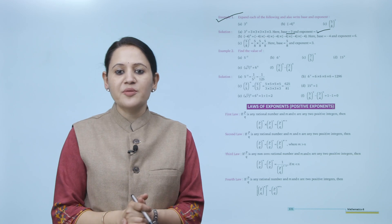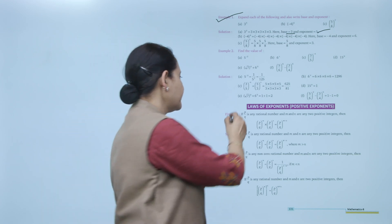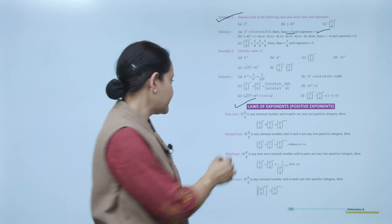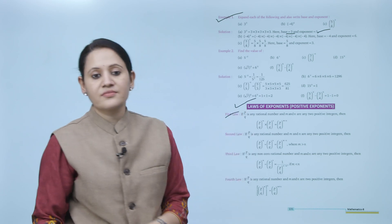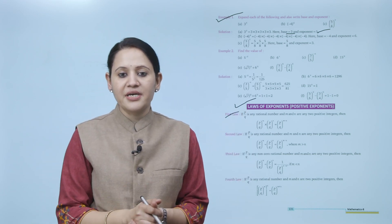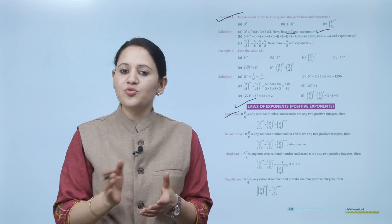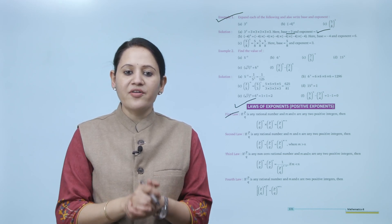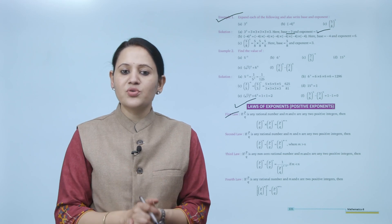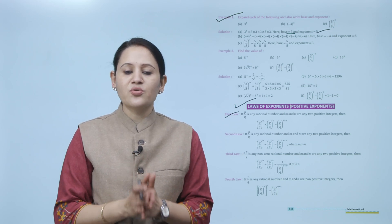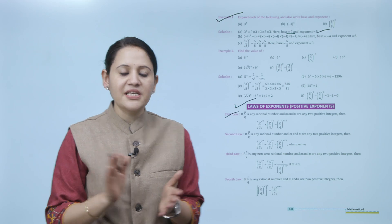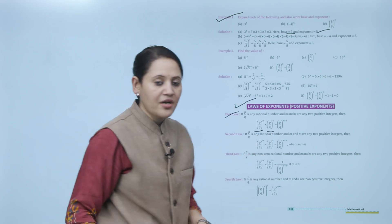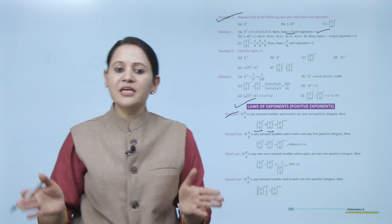Next is laws of exponent for positive exponents. First law: if P/Q is any rational number and m and n are any two positive integers, then (P/Q)^m multiplied by (P/Q)^n equals (P/Q) to the power m+n. Because the base is the same — P/Q — and the powers are different, the powers are added.